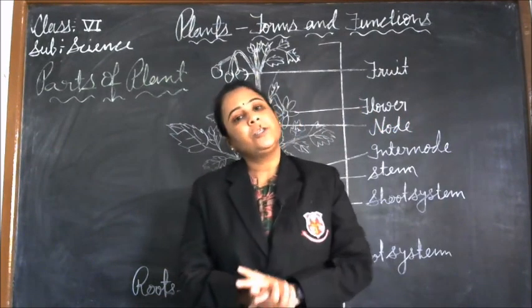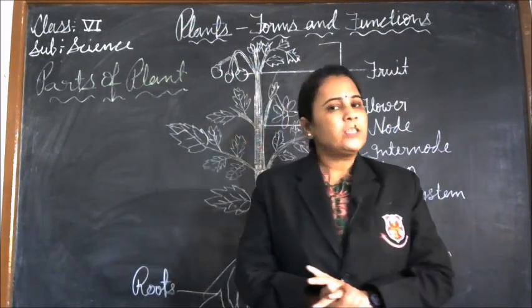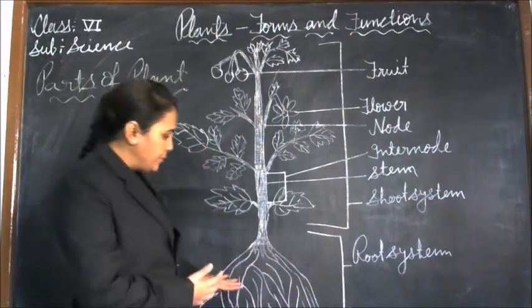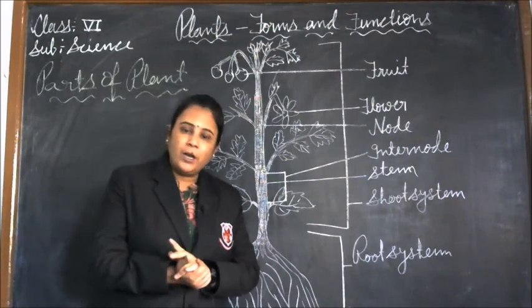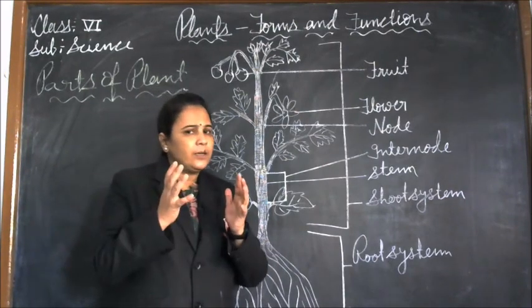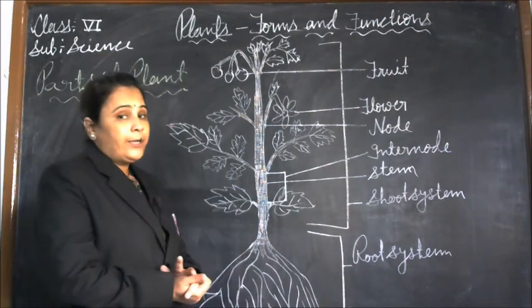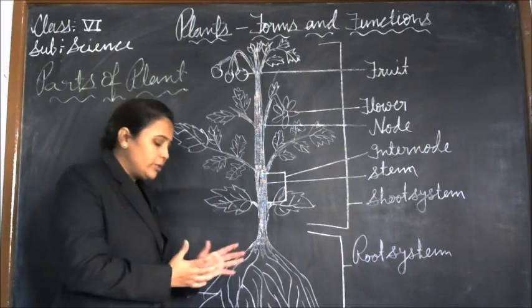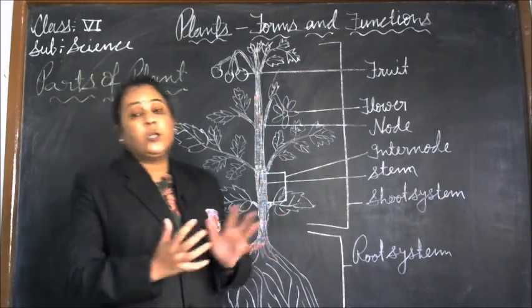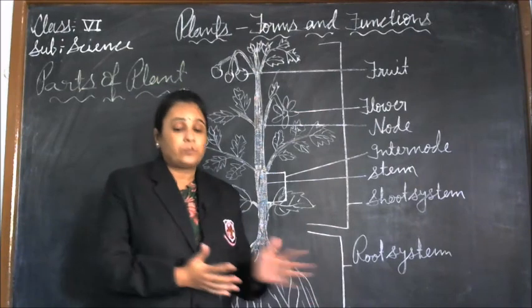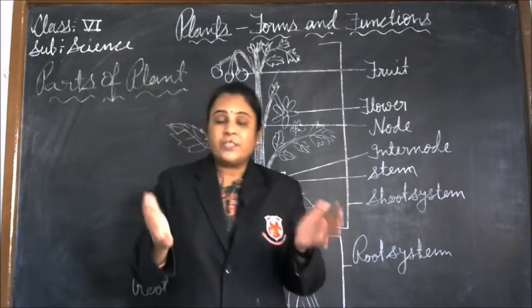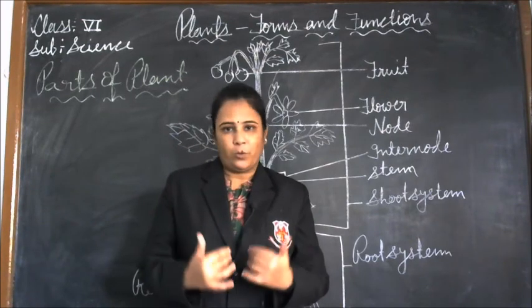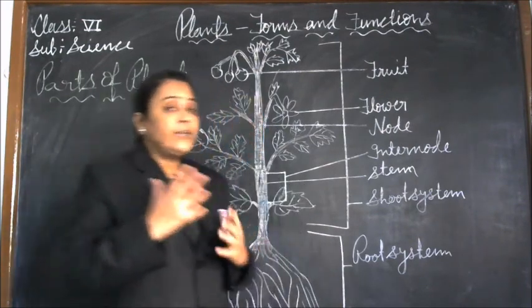First, we will study the function of roots. Roots absorb water and minerals from the soil that are necessary for the growth of the plant. Roots have tiny hair-like structures known as root hairs. These root hairs increase the surface area for absorption so that more water and minerals can be absorbed from the soil.